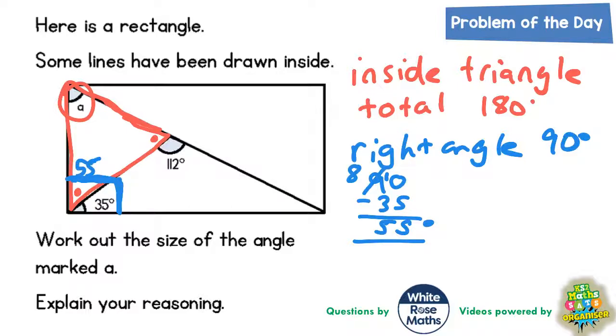Now secondly we've got a straight line here. So this yellow line is a straight line and these two angles are sitting on that straight line. And as we know, angles on a straight line also add up to 180. So angles on a straight line total 180 degrees.